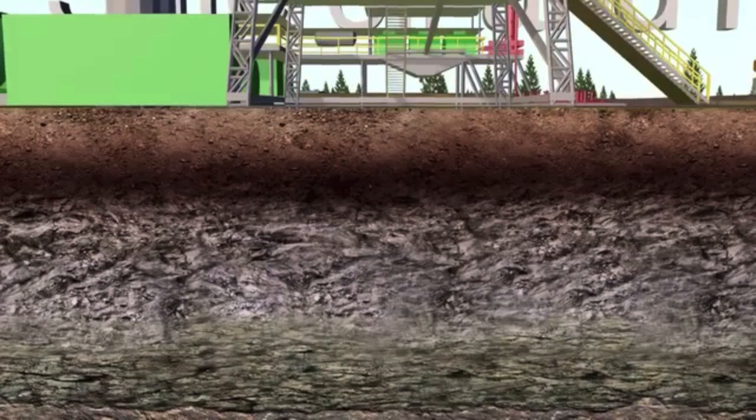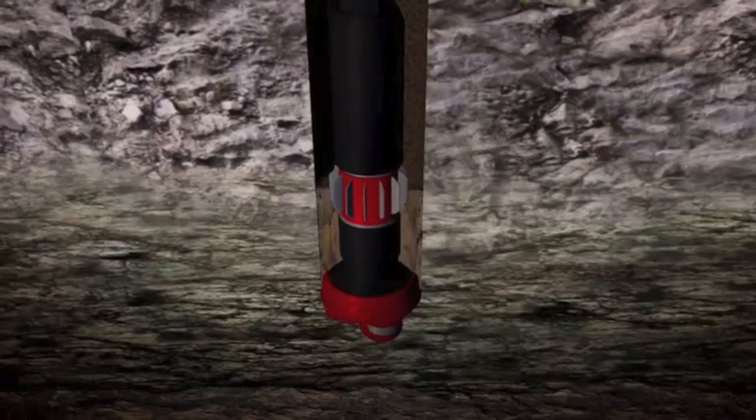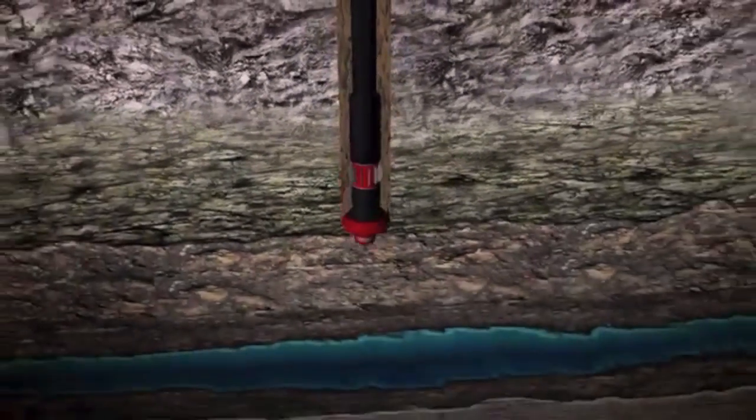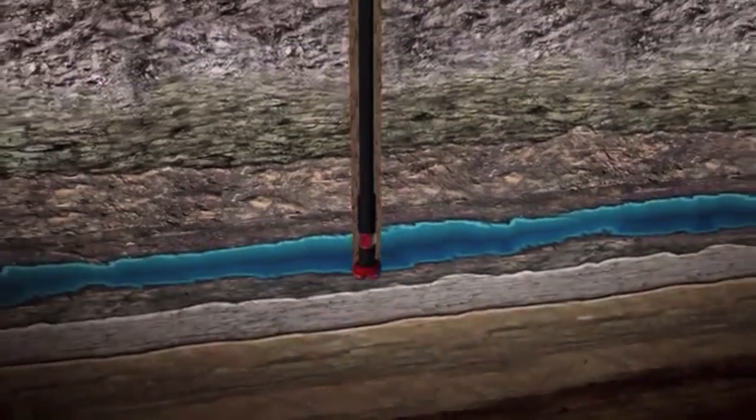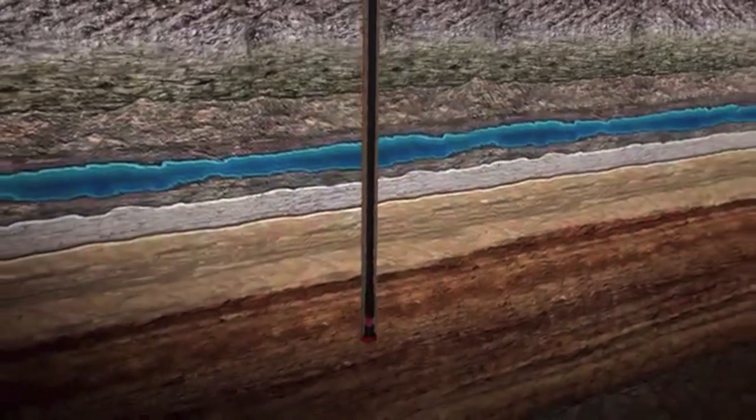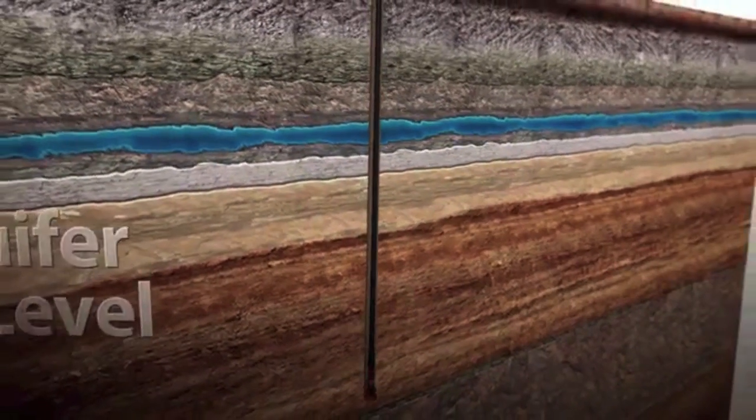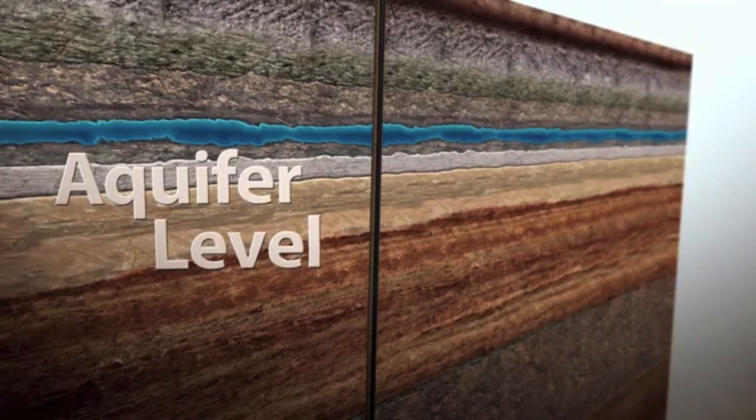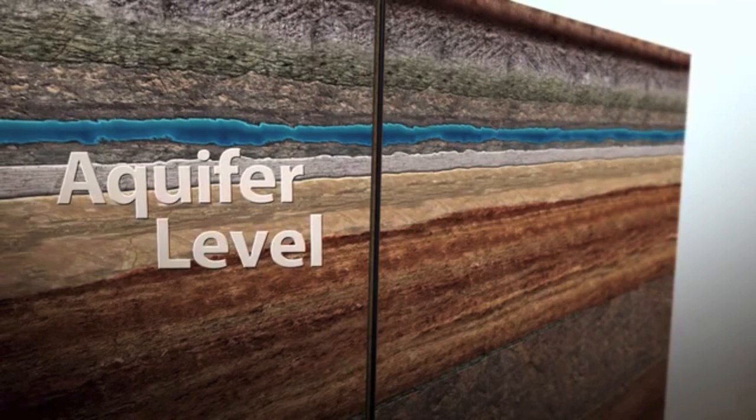The initial wellbore is drilled using a drill pipe and bit. Drilling mud is pumped down through the drill pipe to cool and lubricate the drill bit. Mud also helps stabilize the wellbore and carry the rock fragment cuttings to the surface. The drilling continues well past the aquifer or groundwater level. Thousands of feet of rock separate shale reserves from the lowest groundwater reservoir.